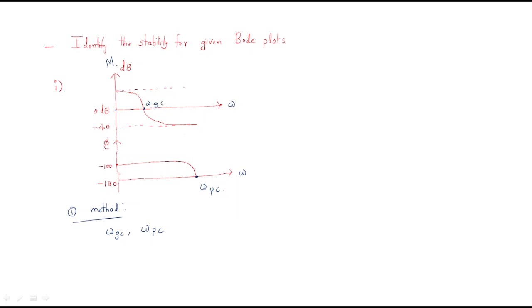Just observe here. This frequency value and this frequency value — those are the same frequency axis. If you observe, the gain crossover frequency is less than the phase crossover frequency. Whenever the gain crossover frequency is less than the phase crossover frequency, the given system is a stable system.